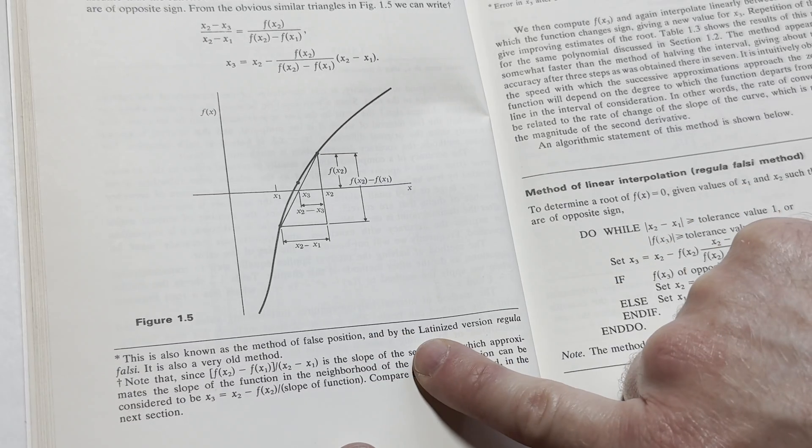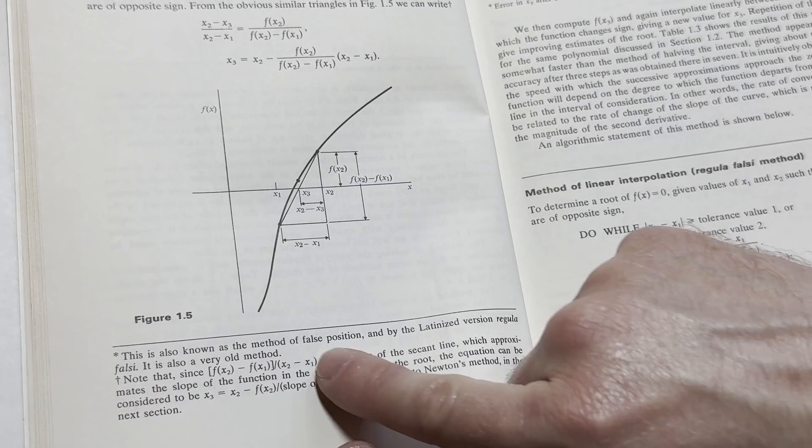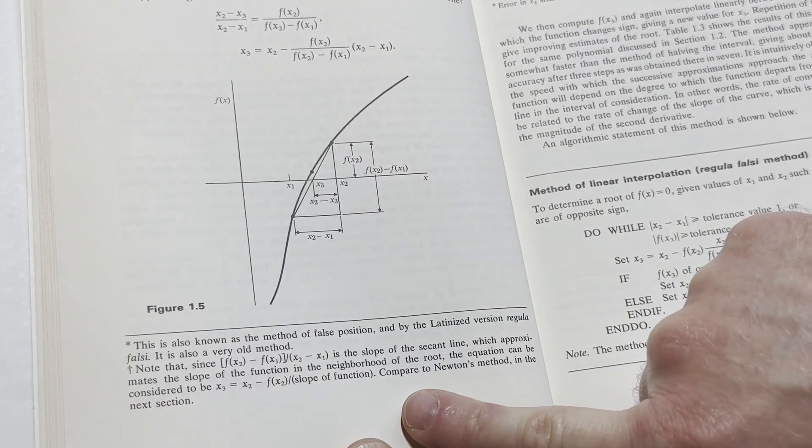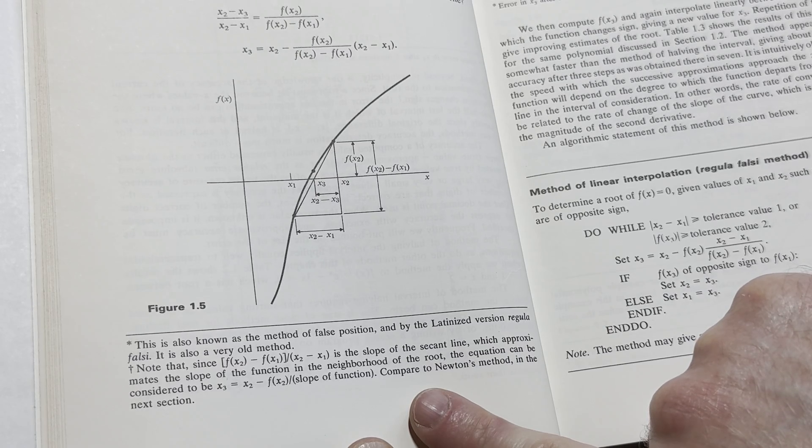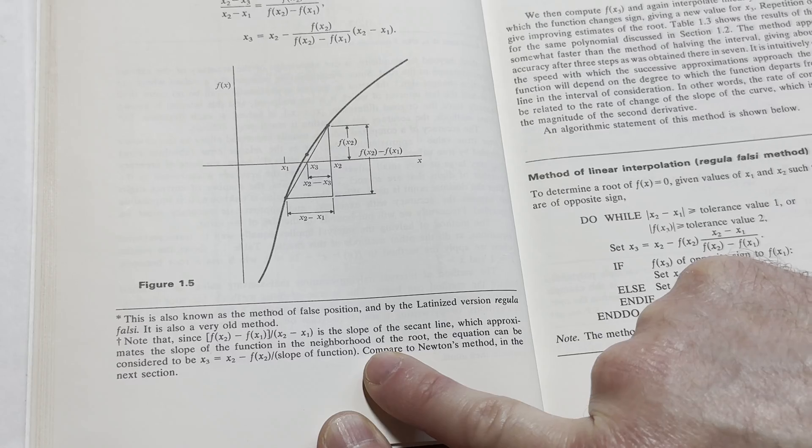Method of false position, it says here. And by the Latinized version, regula falsi. It is also a very old method. It's compared to Newton's method in the next section.